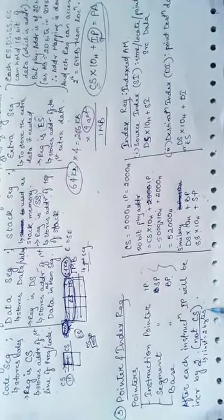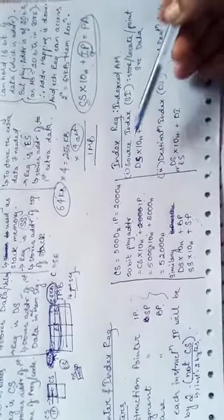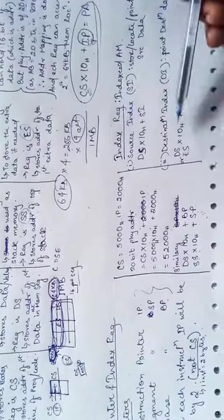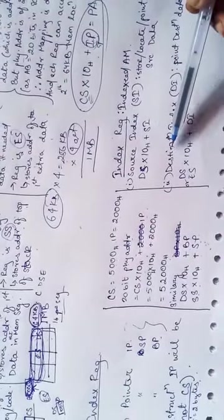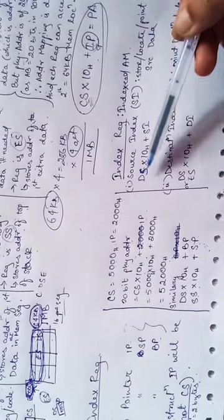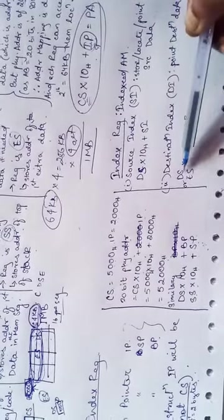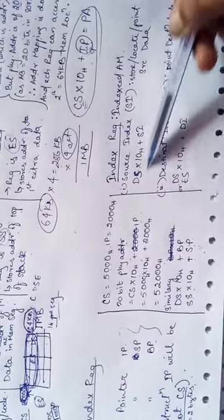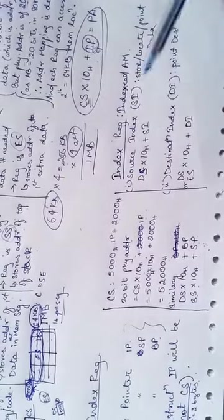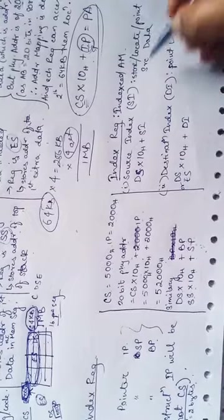In index registers, we have two index registers: source index and destination index. We will do DS times 10H plus SI, or ES times 10H plus DI. This is used when we want to locate or point to the source data.